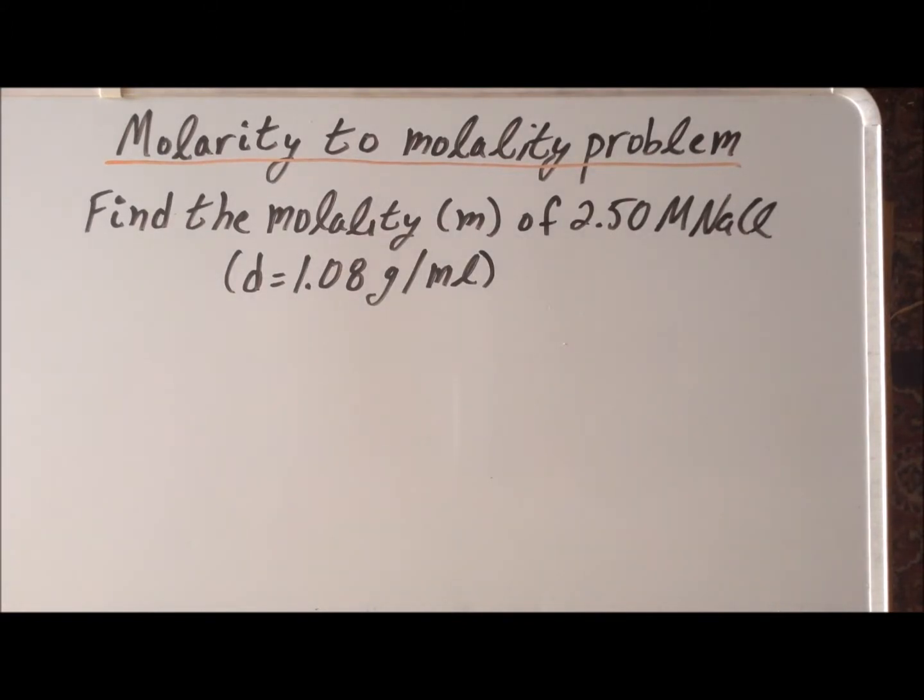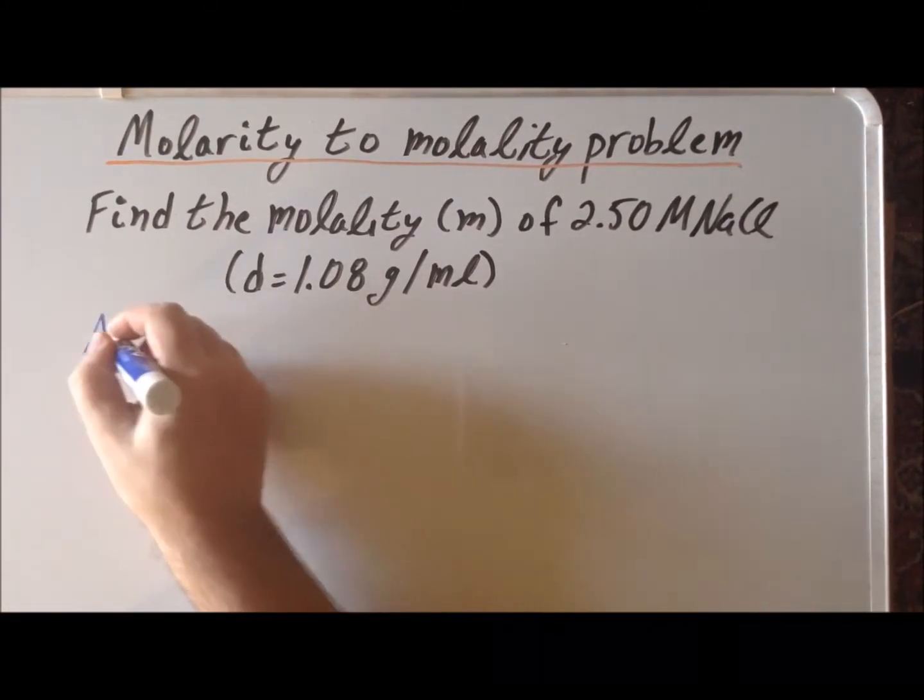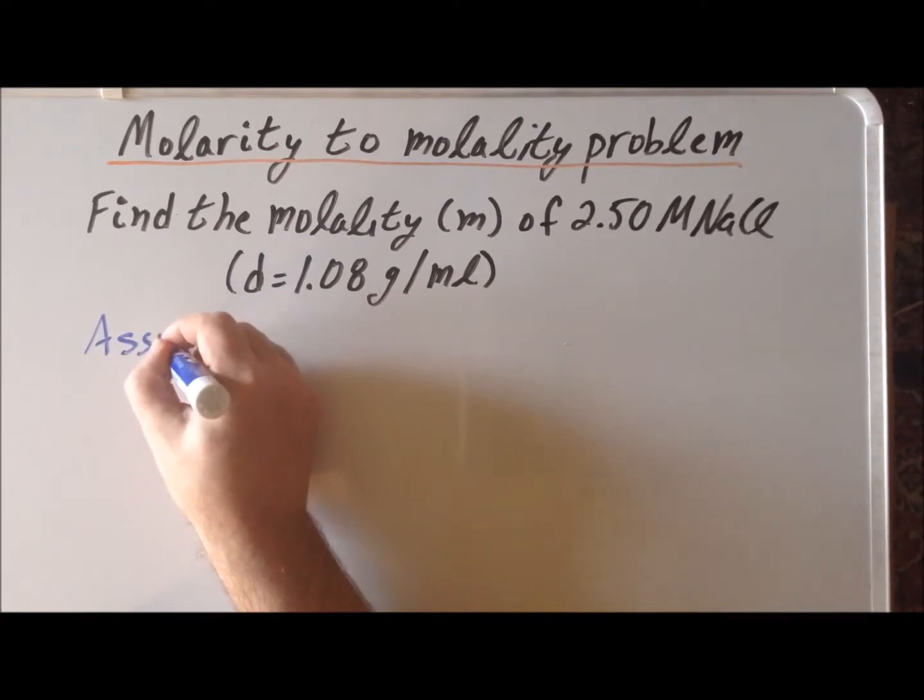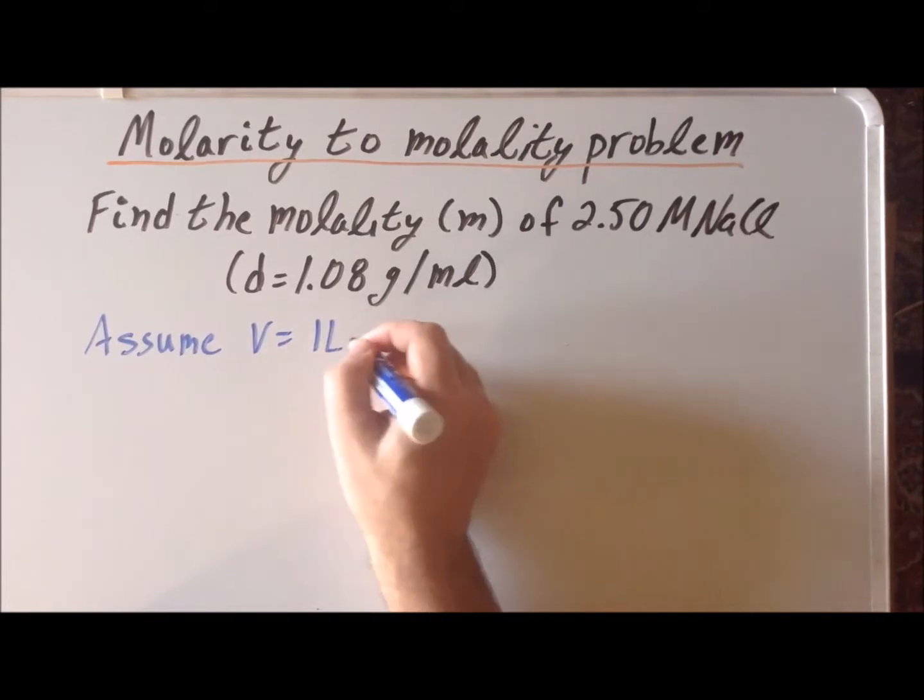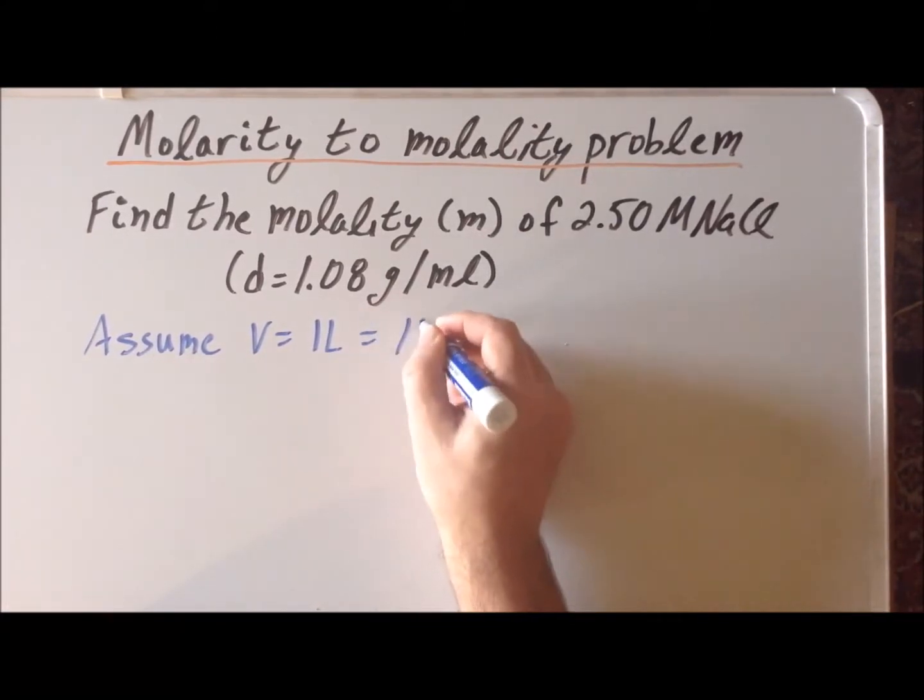The first step of the solution is to make an assumption, and we are going to assume that the volume of our solution is exactly one liter, which is equivalent to 1,000 milliliters.